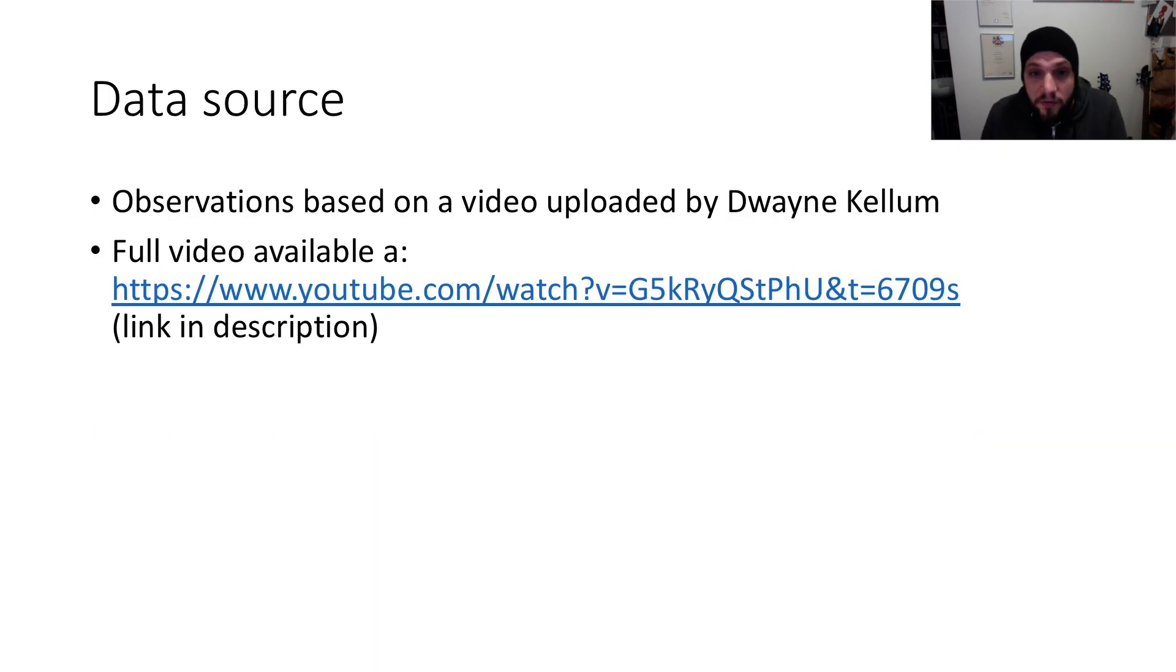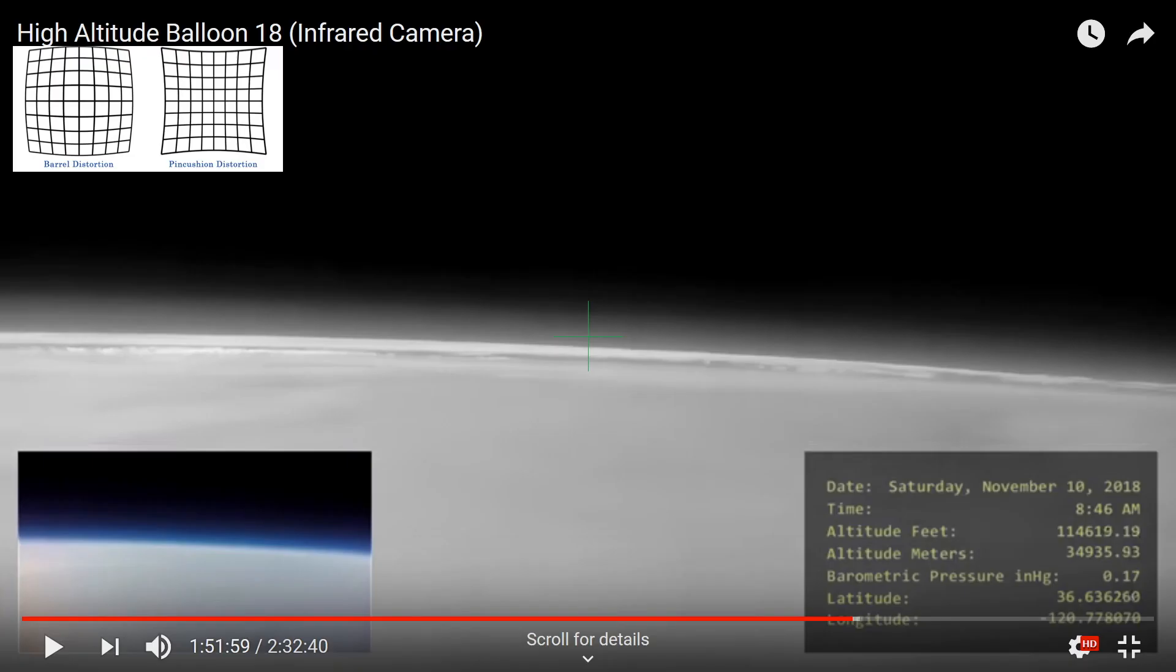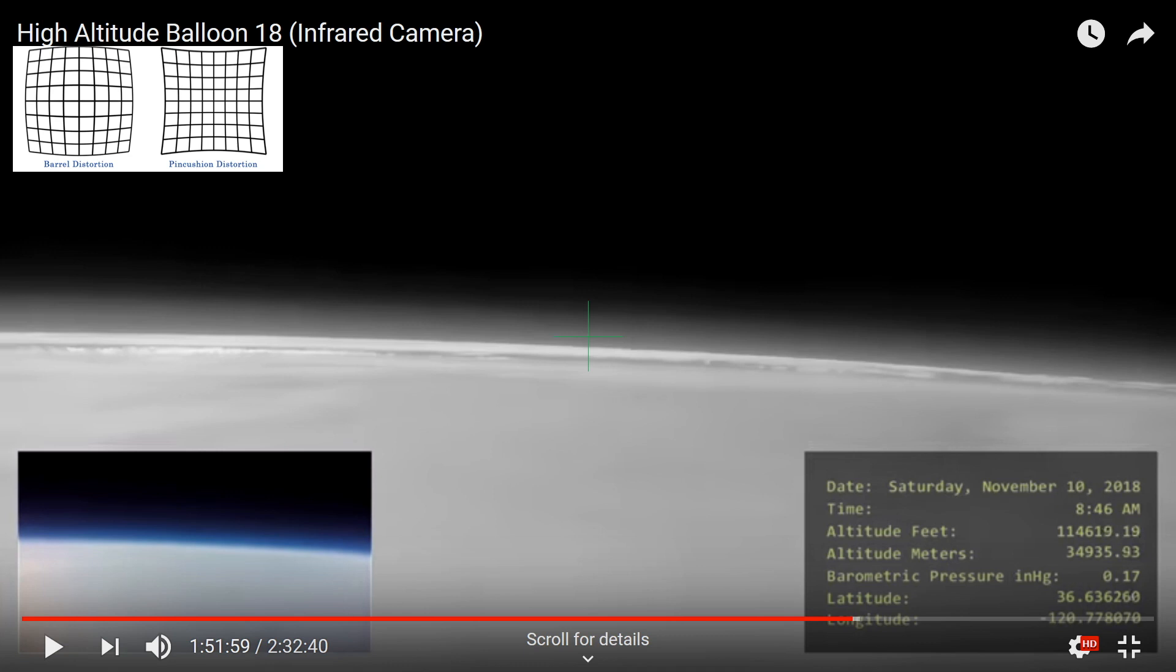We will now move on to some stills from Dwayne's video. I've drawn a green crosshair on the video to show where the center of the image is. So first, we have an image with the horizon close to the center of the image, but it is slightly below the center. Now, I've drawn a straight line from one point to the other on the horizon, and we can clearly see curvature.